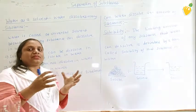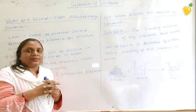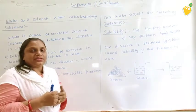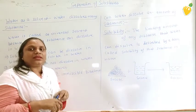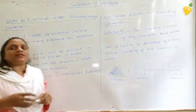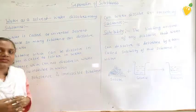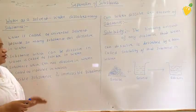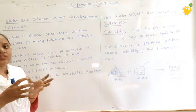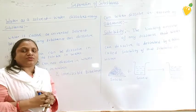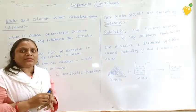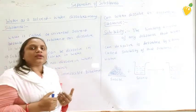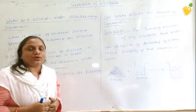If two liquids can be dissolved in each other, they are called miscible liquids. For example, alcohol and water are miscible with each other. Whereas two liquids which cannot be mixed with each other are called immiscible liquids. For example, oil and water — oil cannot dissolve in water.